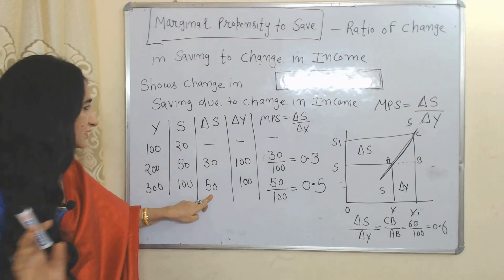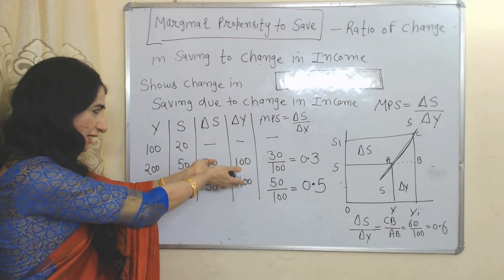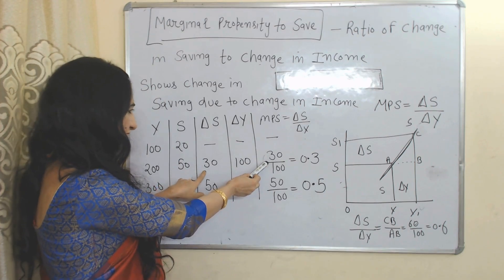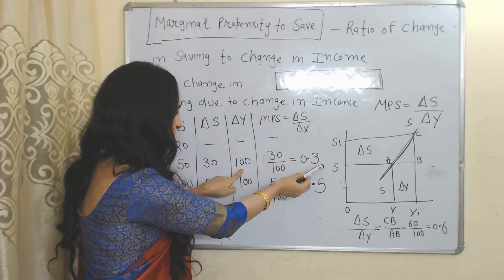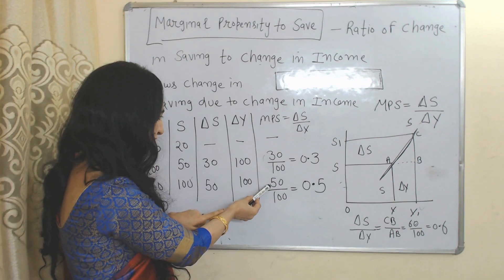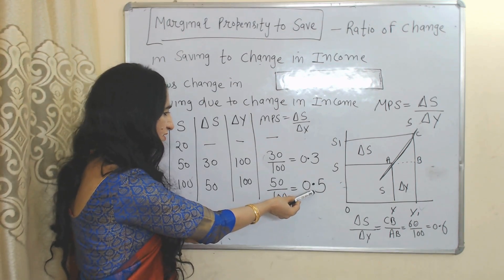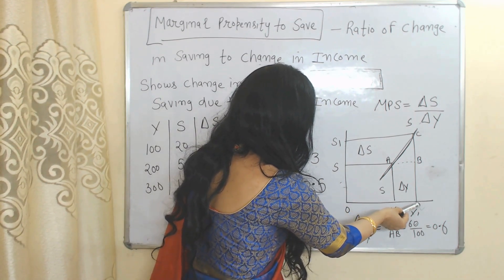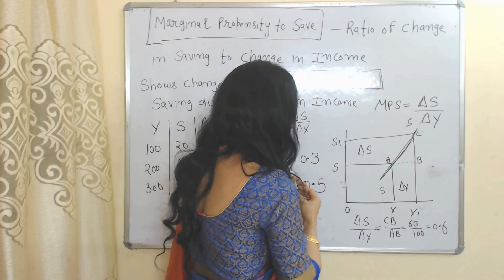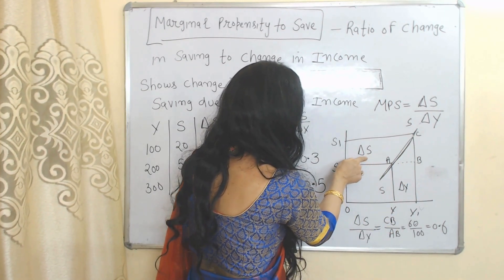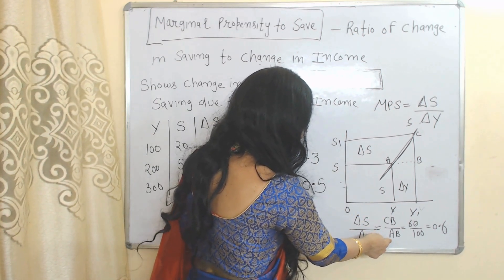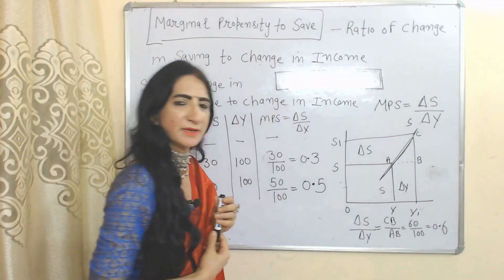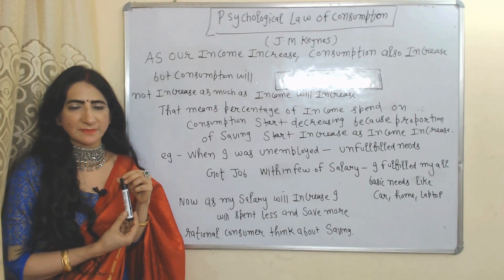In the next case, current saving is 100 and previous saving is 50, so 100 minus 50 equals 50 — this is the change in saving. In the first case, MPS is 30 over 100, so MPS equals 0.3. In the second case, change in saving is 50 and change in income is 100, so MPS equals 0.5. On the graph, when income increases from Y to Y1, saving also increases from S to S1. AB shows change in income, CB shows change in saving. CB over AB equals MPS. With CB as 60 and AB as 100, MPS equals 0.6.